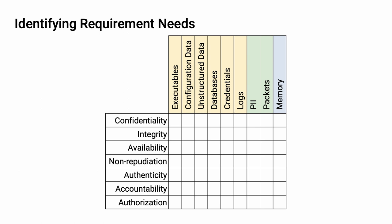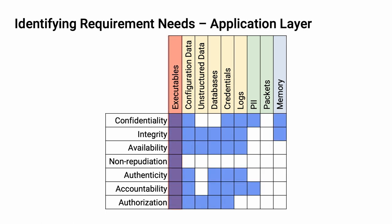Let's start with the application layer. For executables, the case can be made for requirements across all seven cybersecurity properties. Similarly, for configuration data, we can cover six of them, and so on, until we get to memory, where we're only able to assert requirements for confidentiality and integrity. It's important to remember, when creating requirements, that they need to be represented in a way that ensures each is unique, simple, testable, and unambiguous. In doing so, you'll be able to create a mapping between individual requirements and tests to verify their implementation.